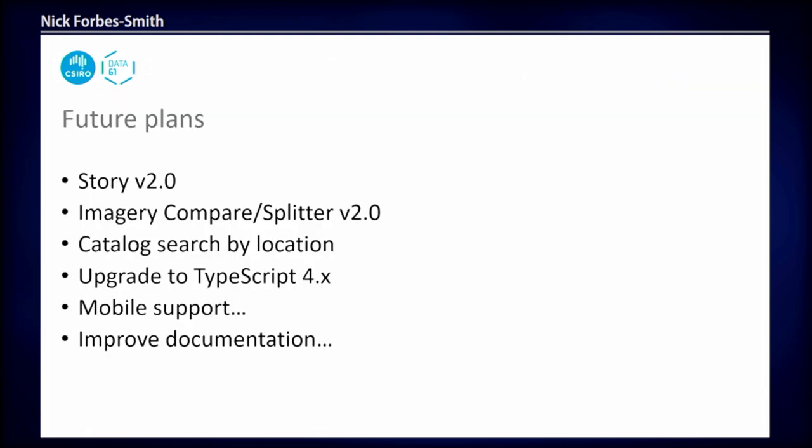Future plans: the big one is adding catalogue search by location — at the moment you can only search through the catalogue by text. Upgrading to TypeScript 4 is going to be a big one, and as always, improving mobile support and improving documentation are big issues for us.